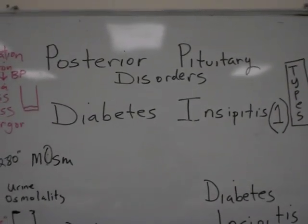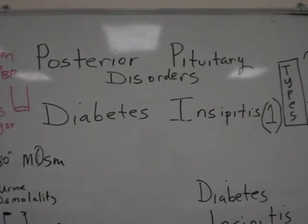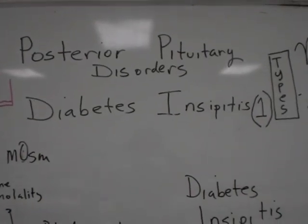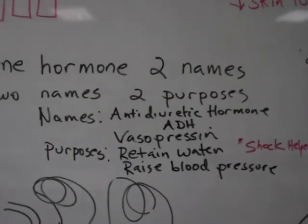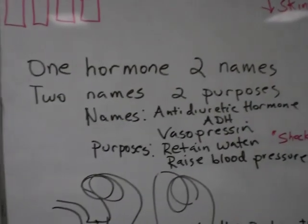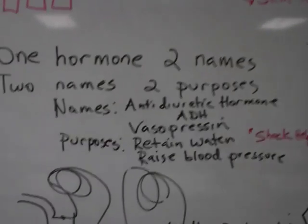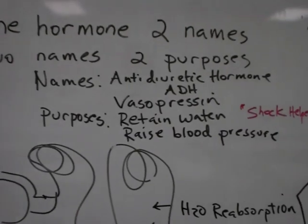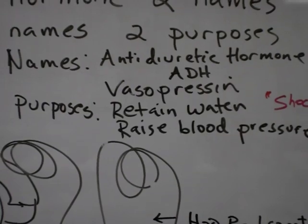We're going to discuss posterior pituitary disorders, namely diabetes insipidus. Before we start, we need to know a little bit more about the hormone involved. The hormone involved has two names and also two purposes. The names are antidiuretic hormone, or ADH, and vasopressin.